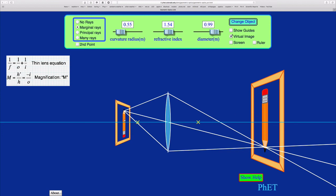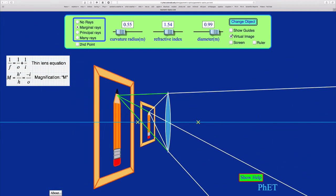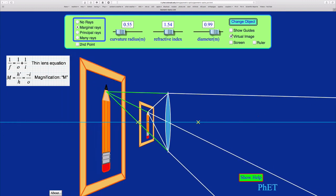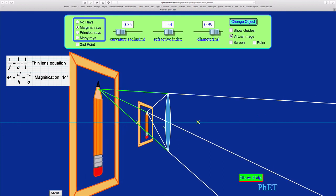When I move over here and get a virtual image, now I can see the magnification is greater than 1, and also it's positive, because the image and the object are both pointing the same way. The image distance here is negative.